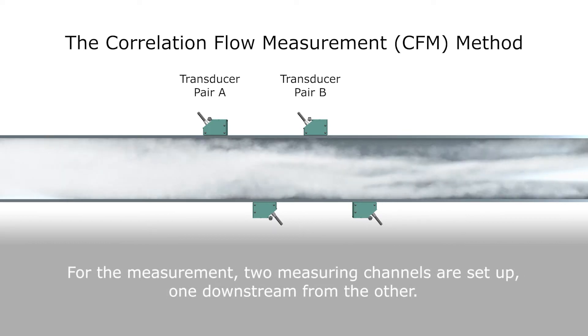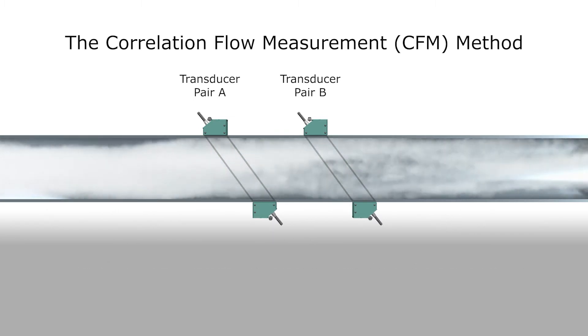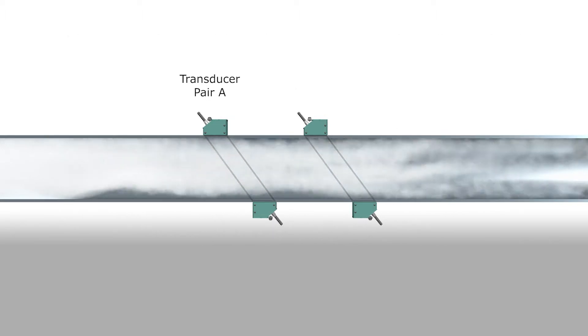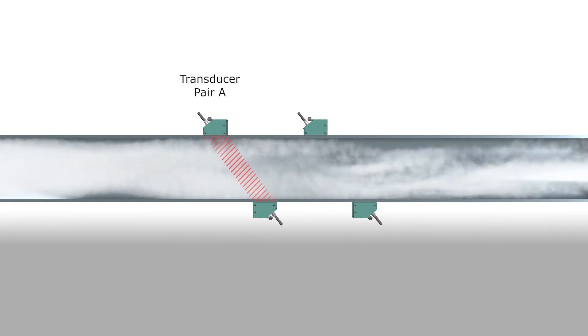Two pairs of transducers are attached non-invasively to the exterior of the pipe. Each pair consists of two transducers precisely positioned opposite each other on opposing sides of the exterior walls, forming a diagonal channel. The transducer pairs are spaced at a mutual distance Delta X. The top transducer in pair A continuously emits ultrasonic signals through the pipe and the fluid towards its paired opposite transducer below.